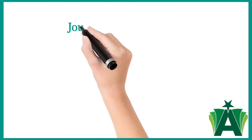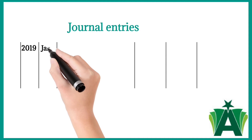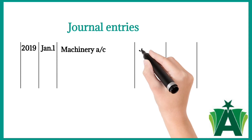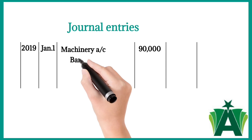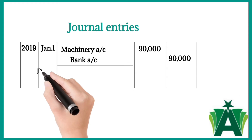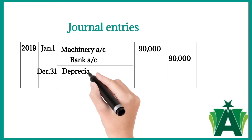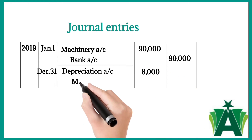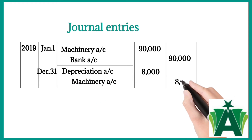Journal entries for 2019: January 1st — Machinery Account debit $90,000 (asset increased), Bank Account credit $90,000 (asset decreased). December 31st — Depreciation Account debit $8,000 (expense increased), Machinery Account credit $8,000 (asset decreased in business).